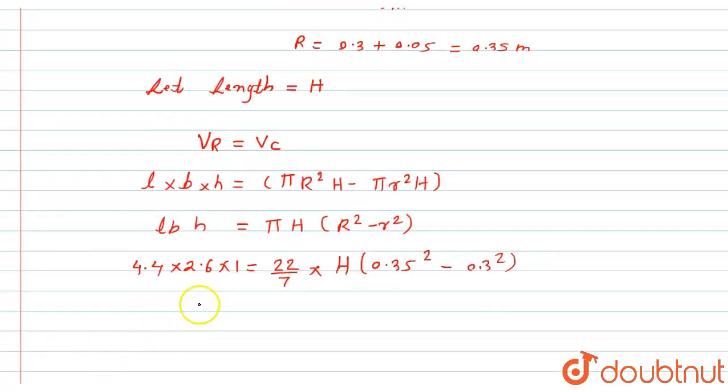Now I am interested to find the value of H, the height of the cylinder. So H equals 4.4 into 2.6 into 7 divided by 22 into 0.0325. Now after solving this, you will get the answer as 112 meter.